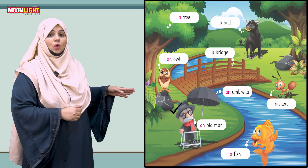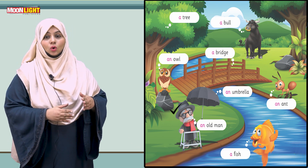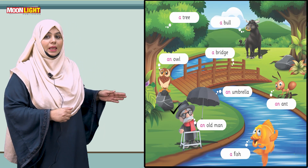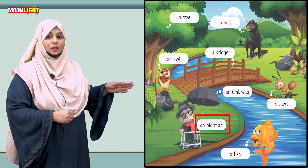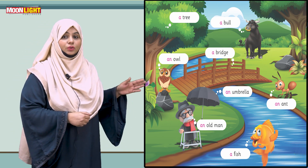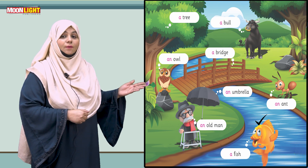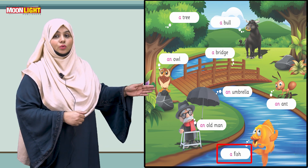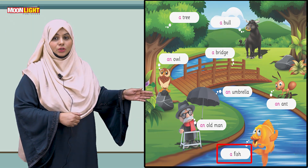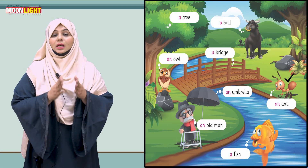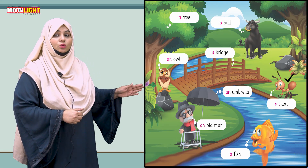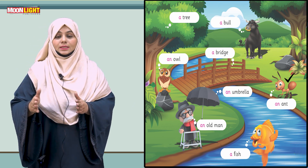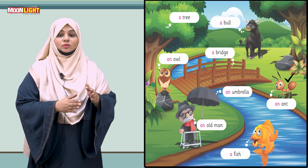Here is a picture of an old man — the first sound is 'o', and 'o' is a vowel sound, so we write 'an old man'. There is a picture of a fish — 'f' is a consonant sound, so we write 'a fish'. Here you can see a picture of an ant — it is drinking water from a pond. The first sound of 'ant' is 'a', which is a vowel sound, so we write 'an ant'.